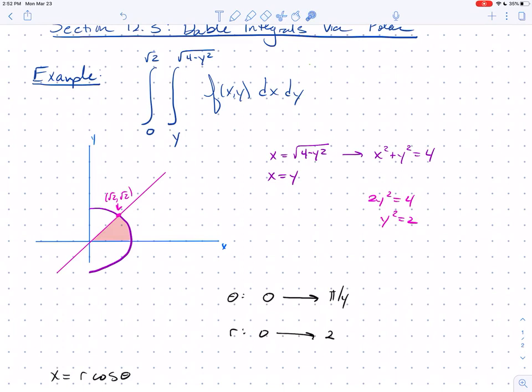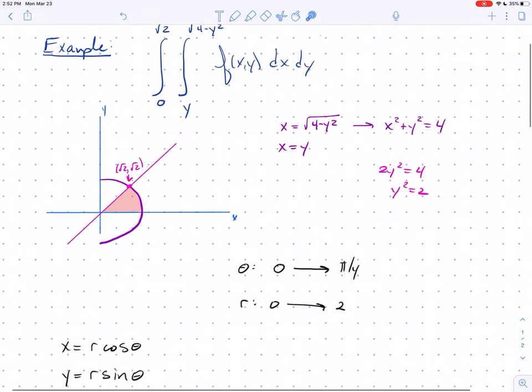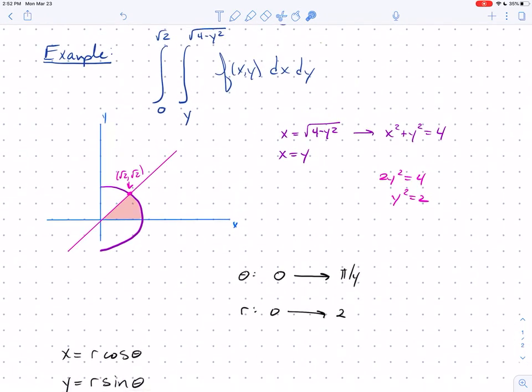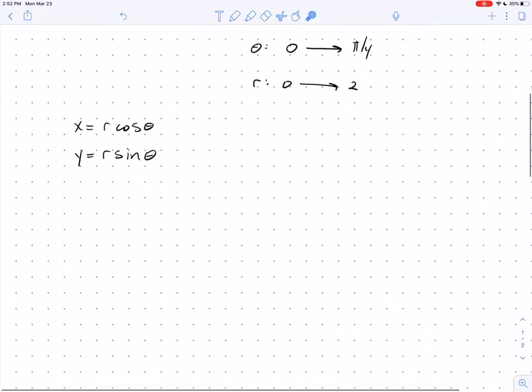When I want to switch the integration here, I'm simply going to rewrite my bounds in terms of their polar bounds. I'm going to plug x equals r cosine theta and y equals r sine theta into f of x,y. It's the dA part, the dx dy part, that changes.